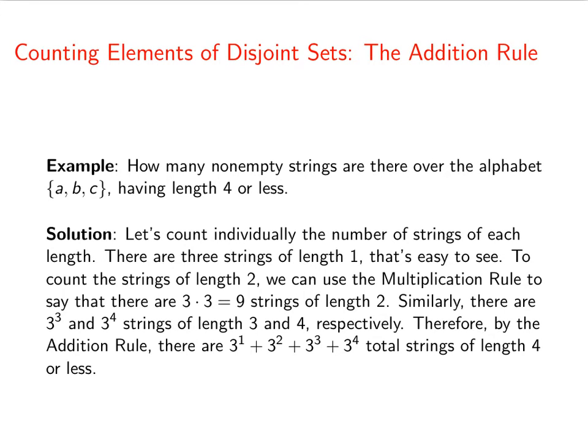Now we use the addition rule. If I wrote down the collection of all strings of length four or less, I could chop that up into four different sets: strings of length one, length two, length three, and length four. The addition rule tells me I can just add all those up because these are disjoint sets. So there are 3¹ + 3² + 3³ + 3⁴ total strings of length four or less.